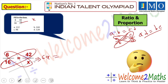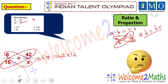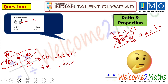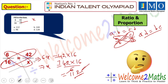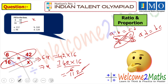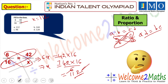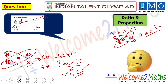So 6x = 42 × 16. Therefore x = (42 × 16) / 6. Since 42/6 = 7, we get 7 × 16 = 112. So the value of x is 112. Looking at the four options, option A is 112, which is our right answer.